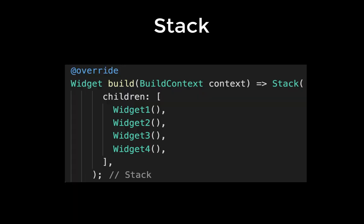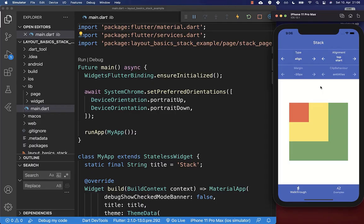Let's get started by creating a stack widget. You go to your build method and then create within the children property all the widgets which you want to display on top of each other. The stack widget has a lot of different properties which we want to look at right now.